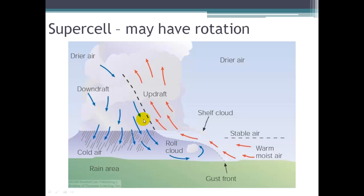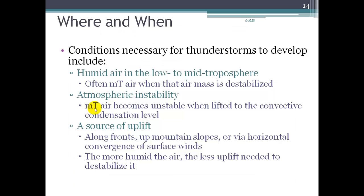Here's a schematic of a supercell. We have our cumulonimbus cloud with an updraft and a downdraft, and a demarcation between drier and moister air — a real difference in density within the cloud. When the downdraft comes down, we can get a gust front that produces what's called a roll cloud. We can get rotation down at the surface and also rotation within the cloud itself — we'll look more at these when we discuss tornadoes later.